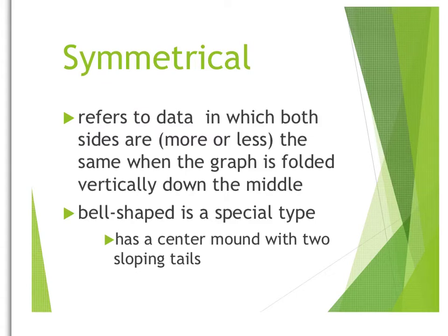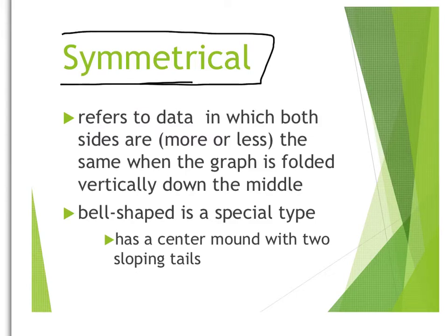Our first type of distribution is a symmetrical distribution, which refers to data which is approximately symmetrical, meaning if I were to fold it in half, it would match up on the sides. One that we'll talk a lot about in this course is a bell-shaped distribution, which looks like the one we made in class when we did the hiring discrimination activity with the dot plot. It just tends to look like this, where there's one mound and where the majority of the data is around the center.